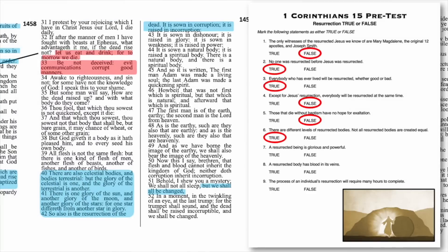Statement number seven: a resurrected being is glorious and powerful. Verses 43-44: "It is sown in dishonor; it is raised in glory. It is sown in weakness; it is raised in power. It is sown a natural body; it is raised a spiritual body. There is a natural body and there is a spiritual body." The answer is true — our bodies will be amazing and glorious. Here are a few scriptures and quotes that give us an idea of that glory and power.